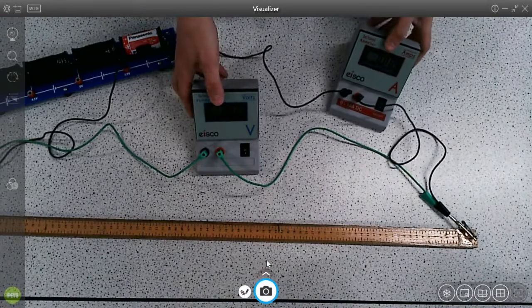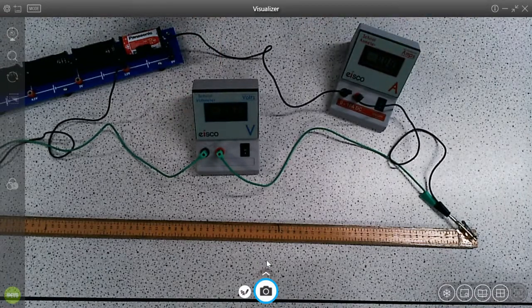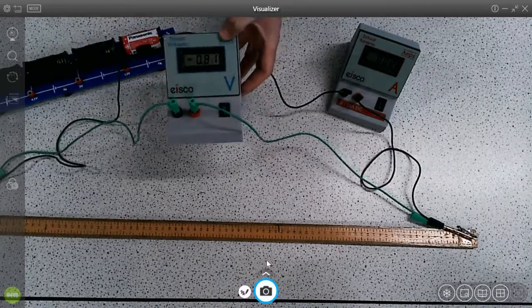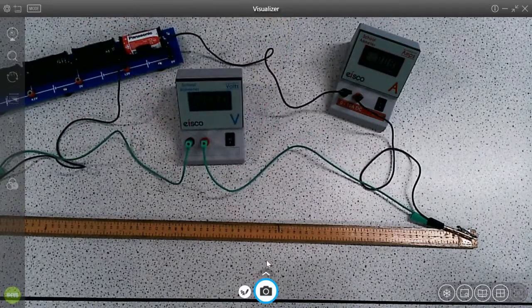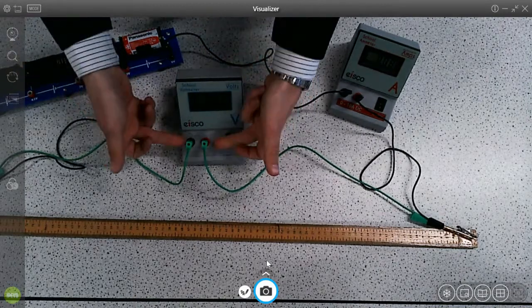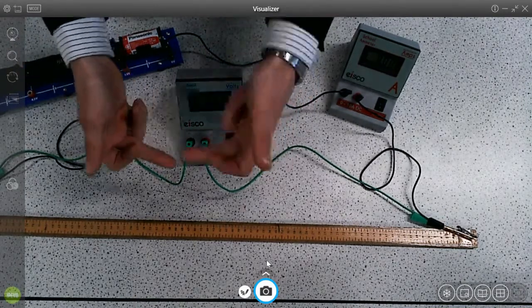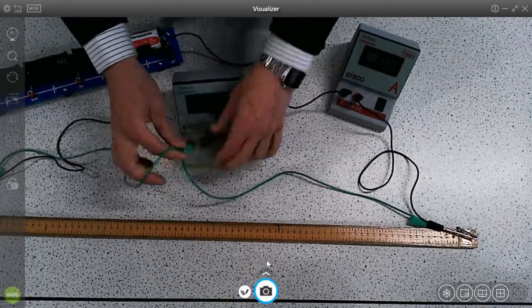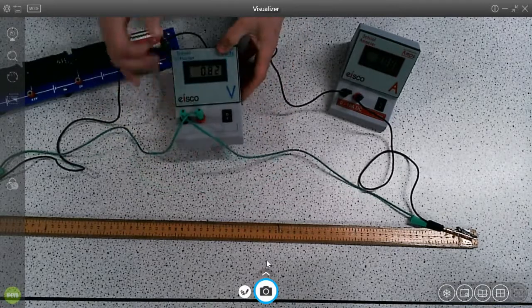The other common thing that confuses students is they will look at one of the meters, and they'll see there's a minus sign there, and they'll go, why is it a minus? Is it broken? And you go, well, no, it just means we're measuring it in the opposite direction. So we've got a positive and negative round the other way.